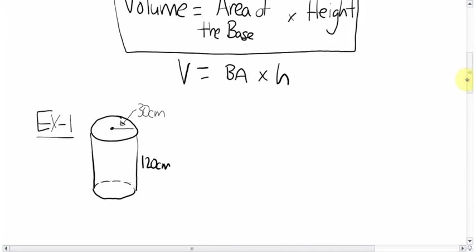So using this formula, let's find the area of this cylinder. So again, volume equals the base area times the height. The base here is a circle. So we're going to have to find the area of this circle and multiply it by the height of the entire thing.